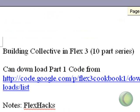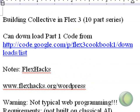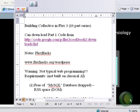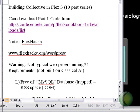Let me just say real quick — you can download the code we're going to show you in this first part from my Google Code. It's code.google.com/p/Flex3Cookbook1 download list. So let me go ahead and show you the collective as it exists for part one.